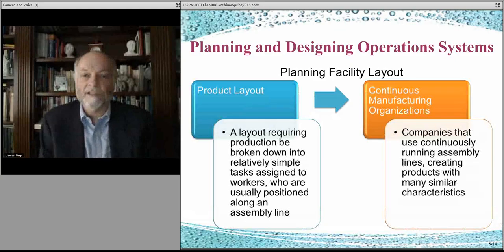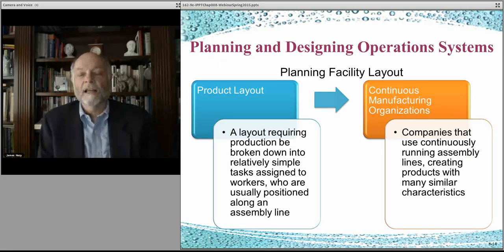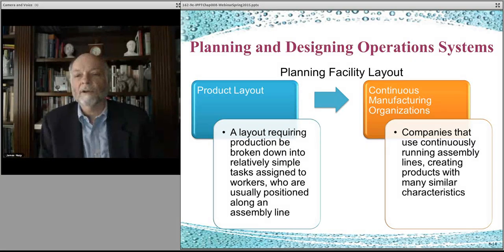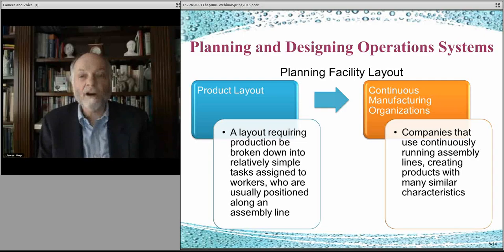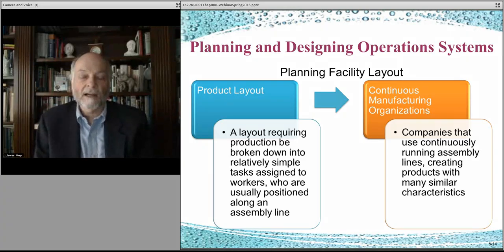A product layout is where you essentially build the same product over and over again. Shifts come in, each person does their piece of it, and the process flows along something like an assembly line where everyone does the same thing continuously. This is called continuous manufacturing — supplies arrive, parts get assembled, and the finished product comes out the other end. This works best when you have high volume, want to minimize cost, and have the demand to support it.